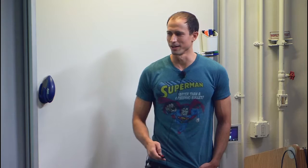What happens if we relax both? I only require density 99% or something, and I also let you look at a much smaller subgraph. Our main result is that this is ETH-hard. Assuming the exponential time hypothesis, this takes quasi-polynomial time, matching the upper bounds for the harder problem.